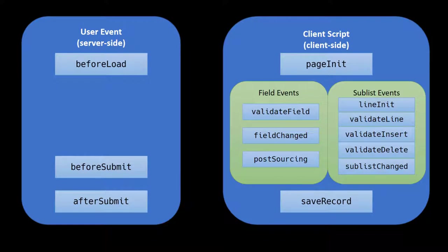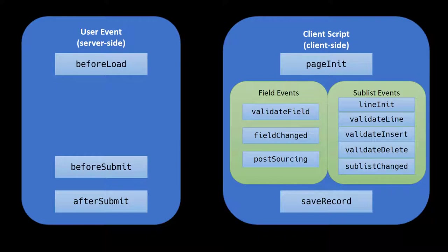We use the client script to respond to the user's interactions with the record form in the user interface. These two scripts are intertwined and each play a separate role in record manipulation. We're going to briefly talk through these various events and how they relate to each other, how they flow together, how they sequence — but not in too much detail in terms of what you might use them for, as that's more project-specific.